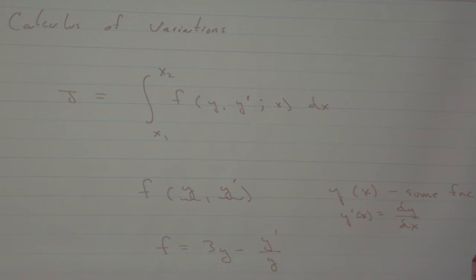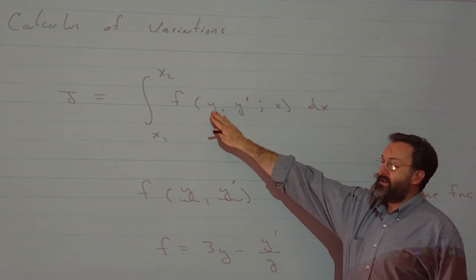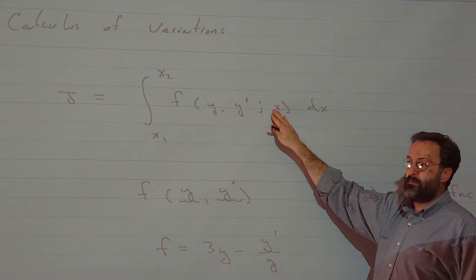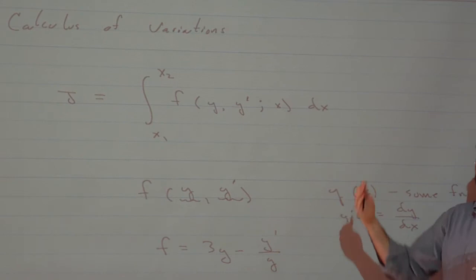So ultimately, I give you a value of x — a value along the real line. And you compute the value of the function y. You compute the value of the function's derivative y prime. You take those two numbers, you stick them into f, and then you have a value for f. So this notation means f explicitly depends on y and y prime, and it implicitly depends on x. When I write f down, I don't see the x's. I only see y's and y prime's. The x's are buried inside of y of x.